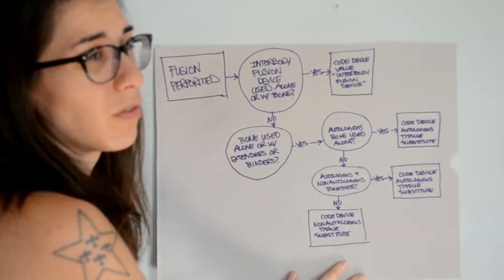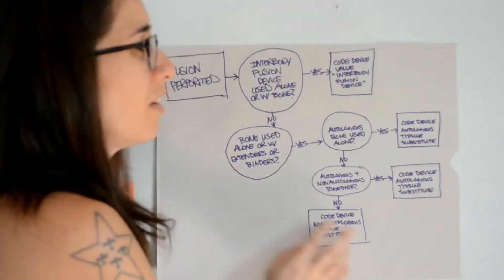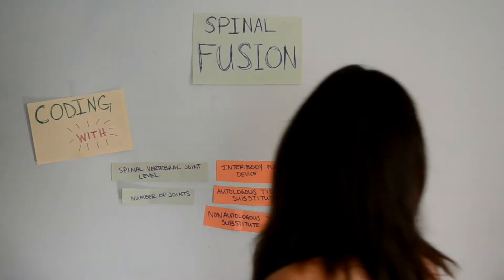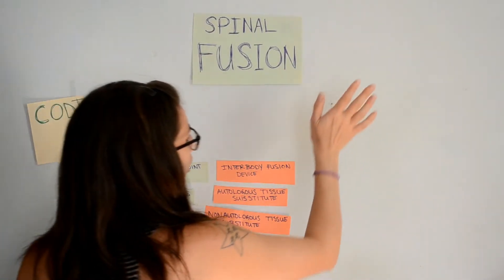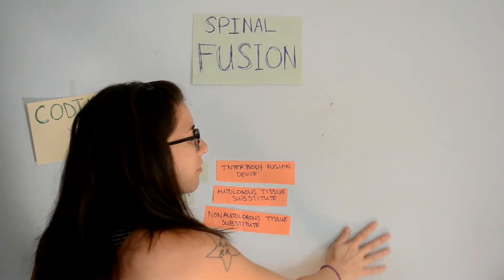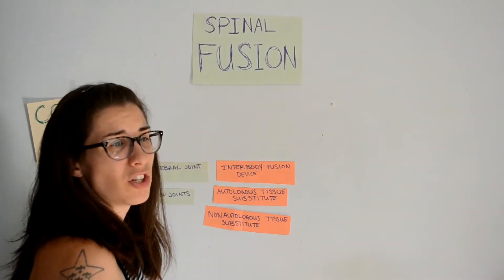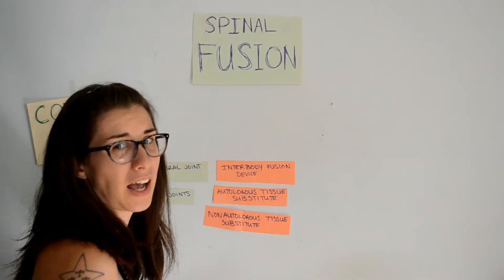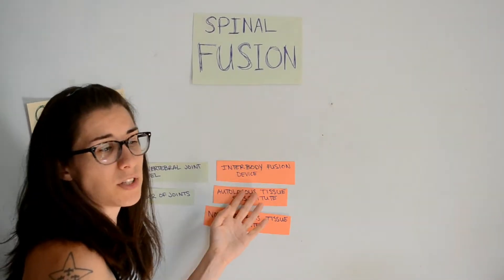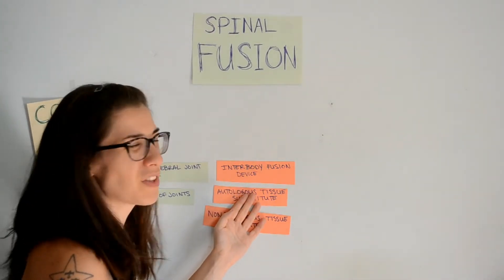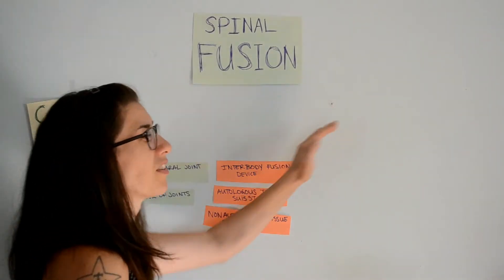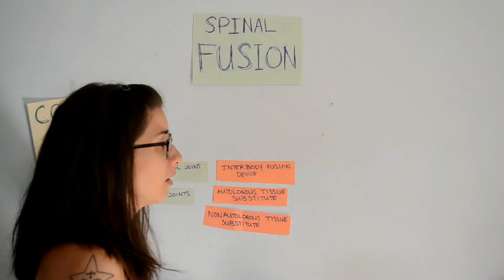That decision tree is very helpful because when there is a mix PCS prefers a specific device code. Make sure you have this decision tree with you when learning to code spinal fusions — you can write notes in your code book as a reminder. Next we get into the qualifier column, which covers the different approaches used to apply either the interbody fusion device or the tissue substitutes. Importantly, this is not the approach column — it is covered in the qualifier column.